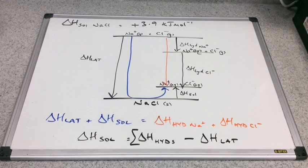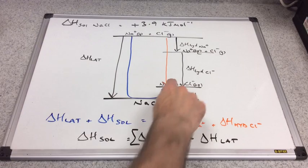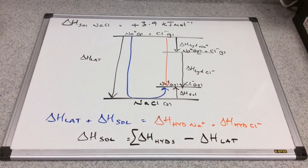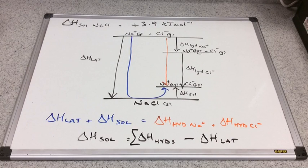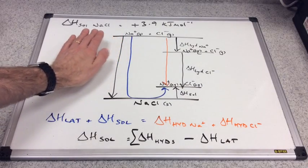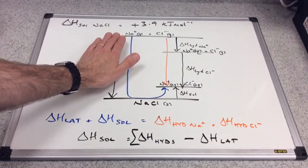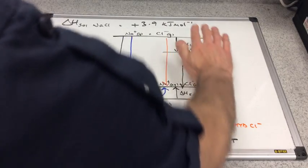We haven't explained why the enthalpy change of solution is sometimes positive and sometimes negative. I'm going to compare this with a similar cycle for lithium chloride — deliberately very similar to sodium chloride — to show the difference. Basically we're looking at the relative sizes of the lattice enthalpy versus the sum of the hydration enthalpies.